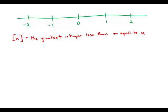The x-bracket notation denotes the greatest integer less than or equal to x. Let's think about this. If we took x-bracket of 1, we'd get 1. If we took x-bracket of 2, we'd get 2.